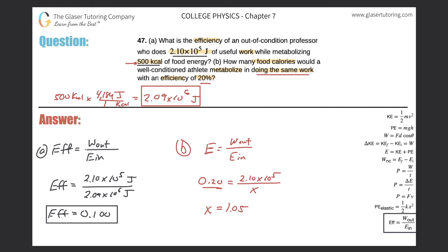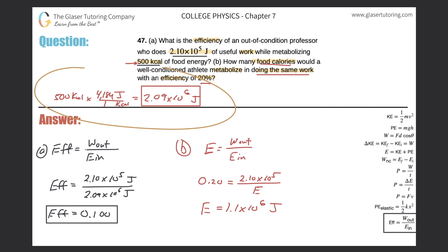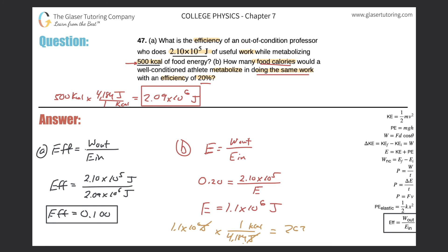With two significant figures that's 1.1 times 10 to the 6 joules. But they wanted to know how many food calories the athlete would need to consume, so we convert from joules back to kilocalories. So 1.1 times 10 to the 6 joules, with joules on the bottom and kilocalories on the top — one kilocalorie for every 4,184 joules — gives us a division: 1.1 times 10 to the 6 divided by 4,184, which works out to about 263 kilocalories.